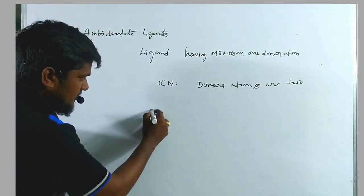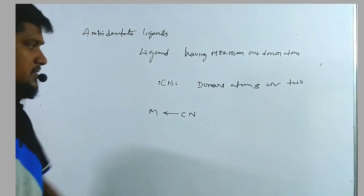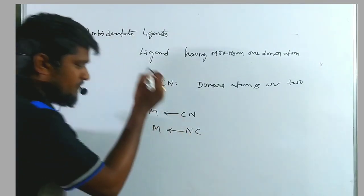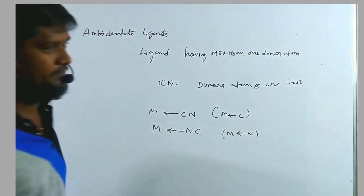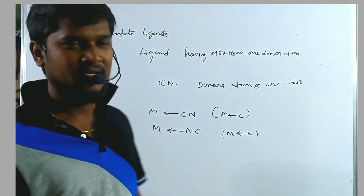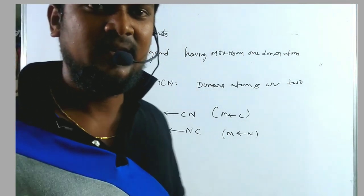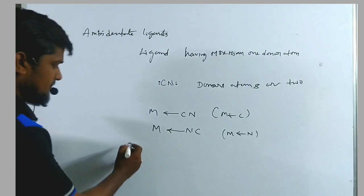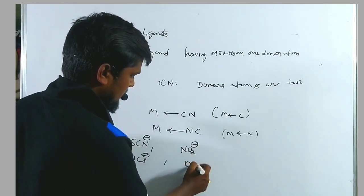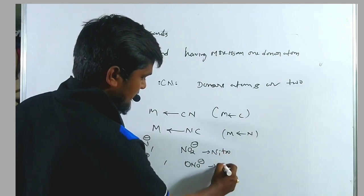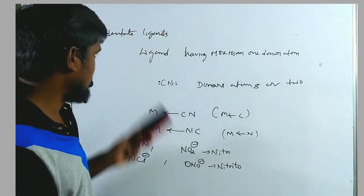Sometimes carbon donates the pair of electrons to the metal, so here a metal-carbon linkage is formed. Sometimes nitrogen donates the pair of electrons, so here a metal-nitrogen linkage is formed. Generally, a single ligand having more than one donor atom gives complexes with different donor atoms. Such ligands are called ambidentate ligands. The best examples are SCN⁻, NCS⁻, NO₂⁻, and ONO⁻ — nitro compound and nitrito compound. These are also best examples for ambidentate ligands.